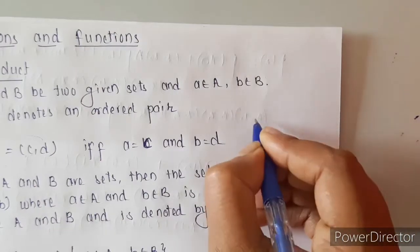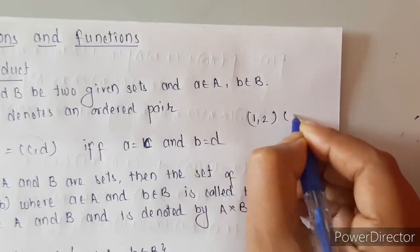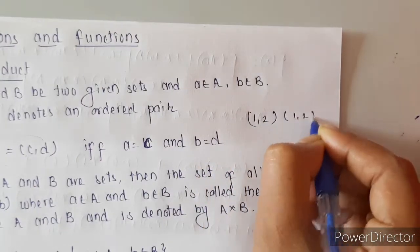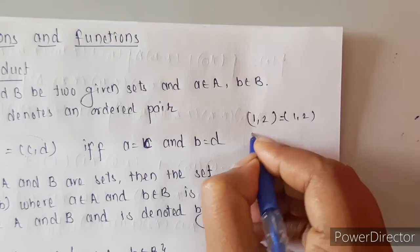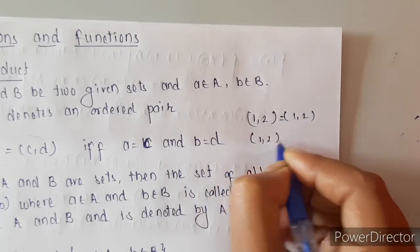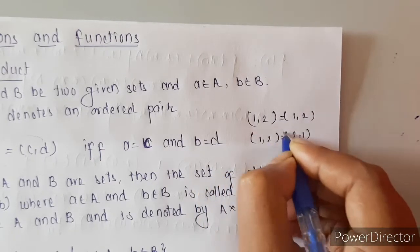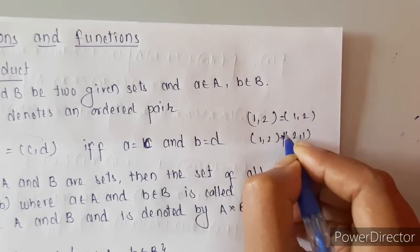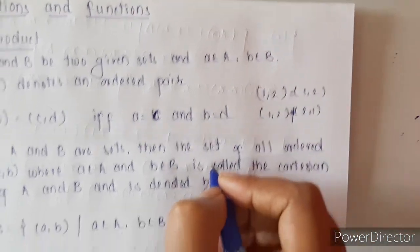For example, suppose we have (1, 2) and (1, 2) — we can say these two are equal. But if we have (1, 2) and (2, 1), then these two ordered pairs are not equal.